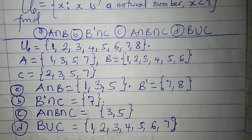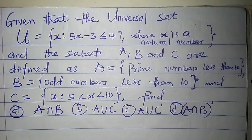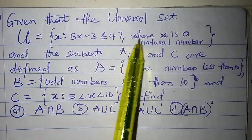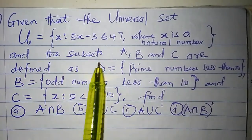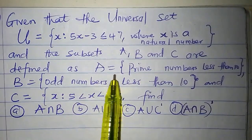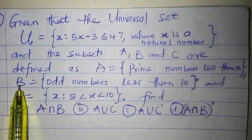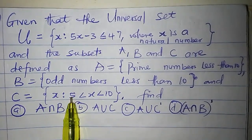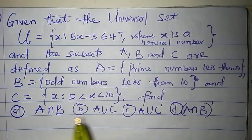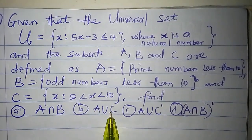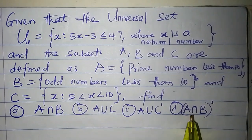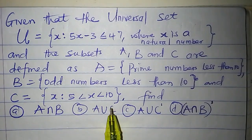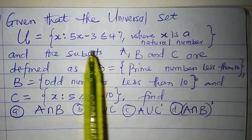Let's see the second question. Question two says: given that the universal set is the set of numbers X such that 5X minus 3 is less than or equal to 47, where X is a natural number, and the subsets A, B, and C are defined as A is the set of prime numbers less than 10, B is the set of odd numbers less than 10, and C is the set of numbers X such that 5 is less than X and X is less than 10. We are to find A intersection B, A union C, A union C complement, and A intersection B complement.